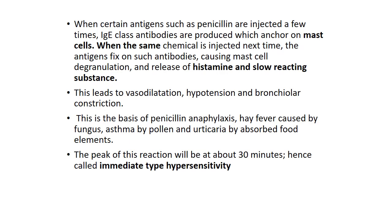When certain antigens such as penicillin are injected a few times, IgE-class antibodies are produced which occur on the mast cells. When the same chemical is injected next time, the antigens fix on such antibodies, causing mast cell degranulation or lysis of the mast cell, which releases histamine and slow-reacting substance. This leads to vasodilation, hypotension, and bronchial constriction. This is the basis of penicillin anaphylaxis. Hay fever is caused by fungus, asthma by pollen, and urticaria by absorbed food elements. The peak of this reaction is about 30 minutes — this is called the immediate type of hypersensitivity reaction.